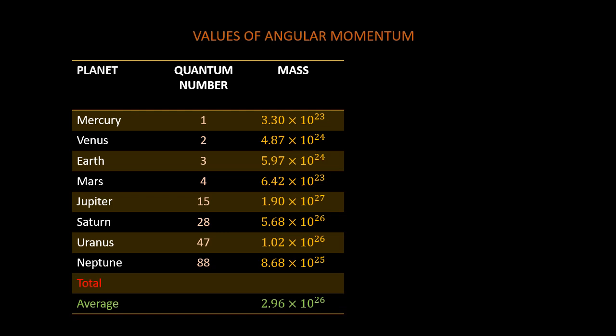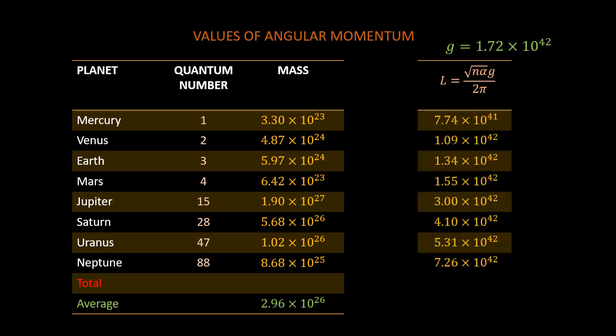Let's now calculate the momentum using this formula. Note that G is equal to G prime times the average mass 2.96 exponential 26 kilograms. That is, we assume that every planet has the same mass, which is this value. So, G is equal to 1.7 exponential 42. Subbing in the values for each planet yields the following values of momentum. The total momentum is therefore 2.4 exponential 43 and the average is approximately 3.1 exponential 42 joule second.